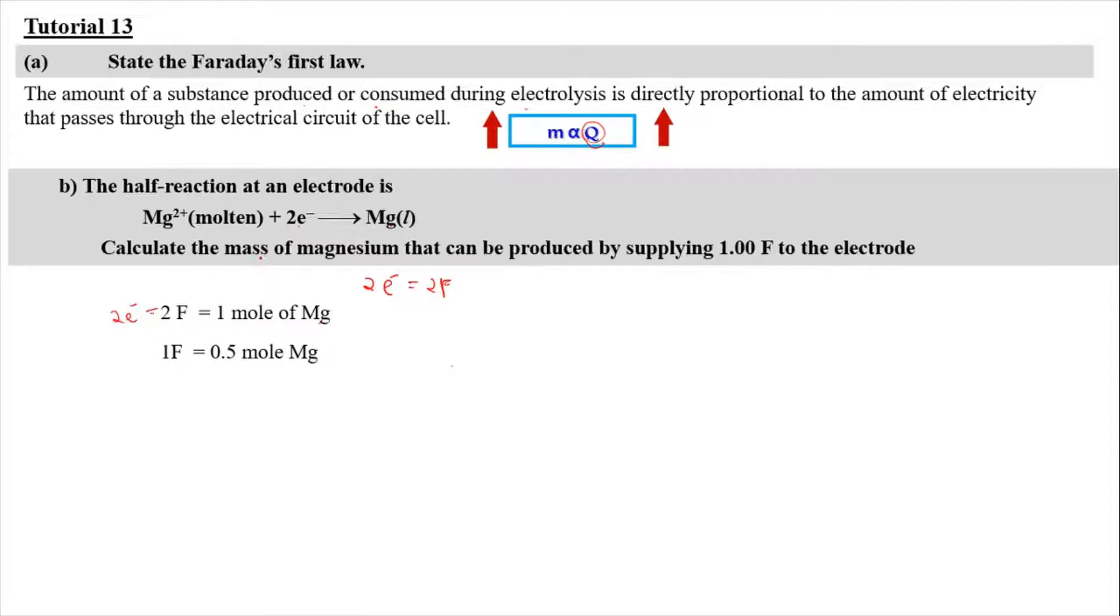Now we need to find the mass of magnesium. So the mass of magnesium can be calculated from mol multiplied by molar mass. So 0.5 mol multiplied by 24 gram per mole, we'll get 12 gram. So that's it for tutorial equation B.